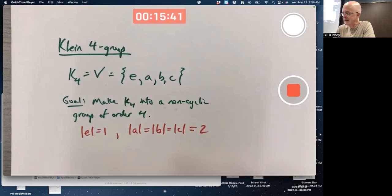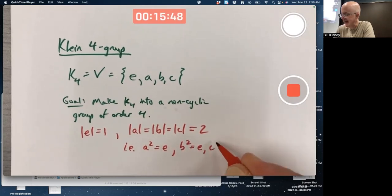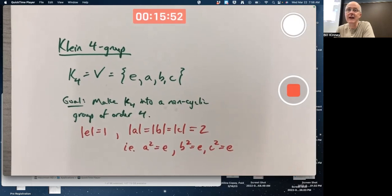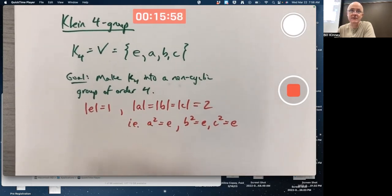And that means, i.e., when you square them, you get back to the identity, and they themselves are not the identity. A, B, and C are not equal to E. That tells you what the Cayley table starts to look like. Let's make the Cayley table here.